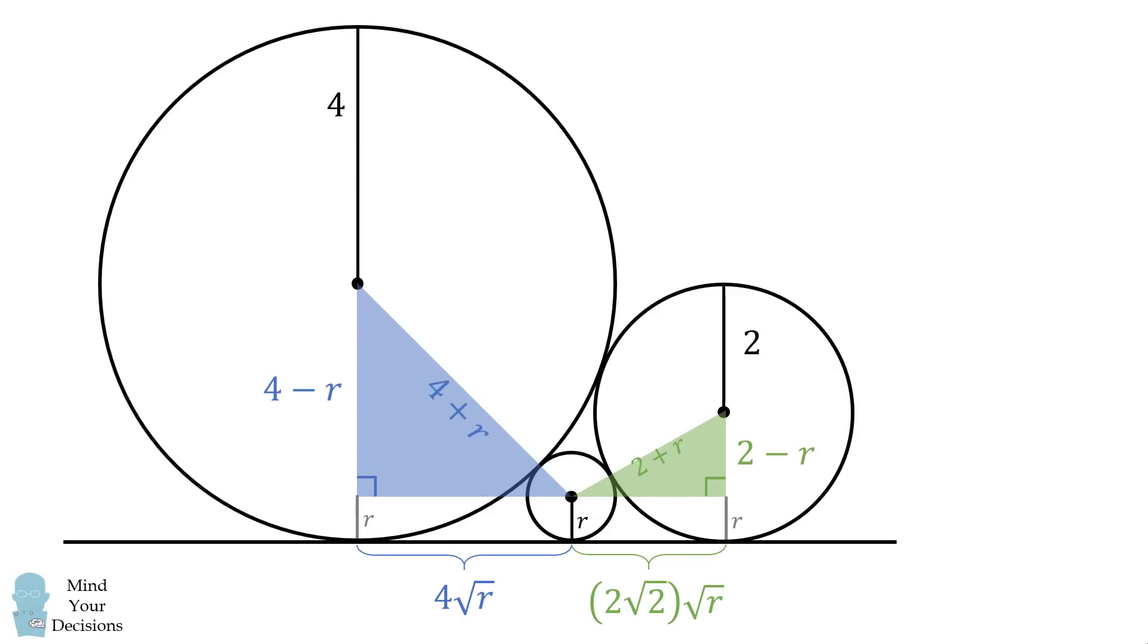Now there's one more right triangle to consider. This will connect the centers of the two larger circles. The hypotenuse will be the sum of the radii. 4 plus 2 is equal to 6. One leg will be 4 minus 2, and that's equal to 2. The other leg is parallel to the two lengths at the bottom. So this will be square root of r times the quantity 4 plus 2 times the square root of 2.